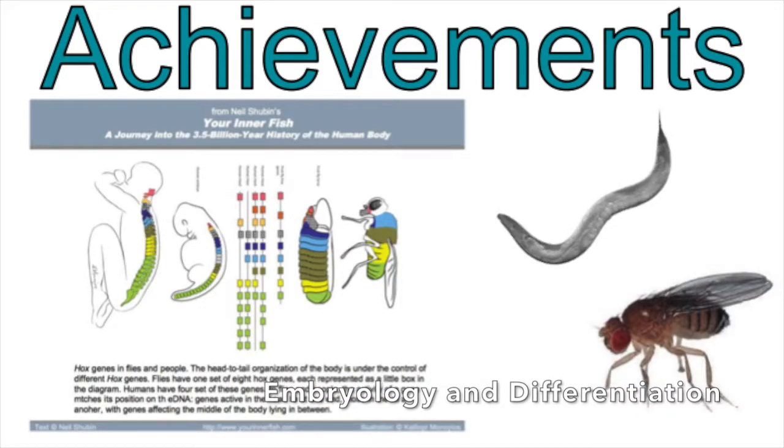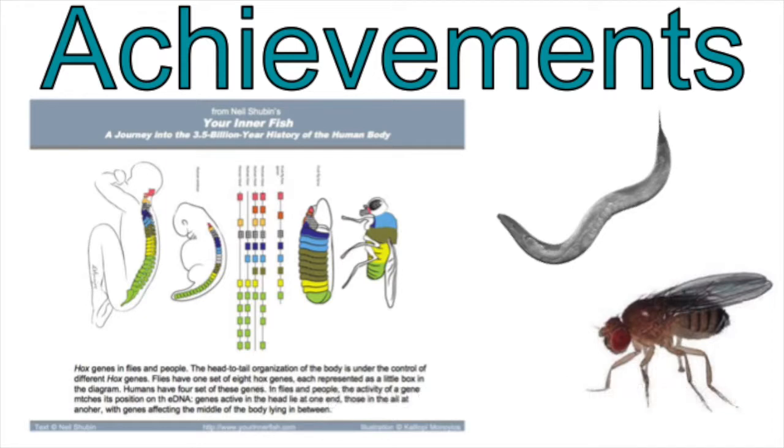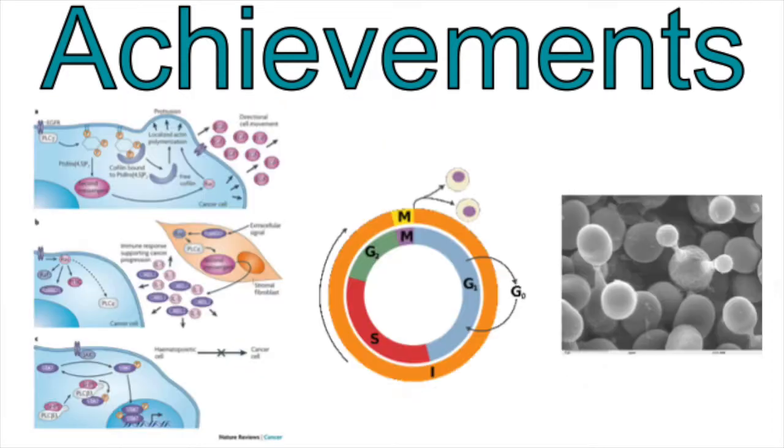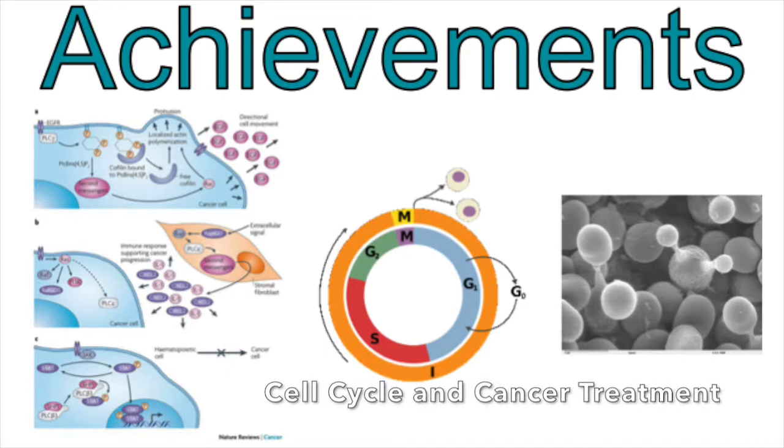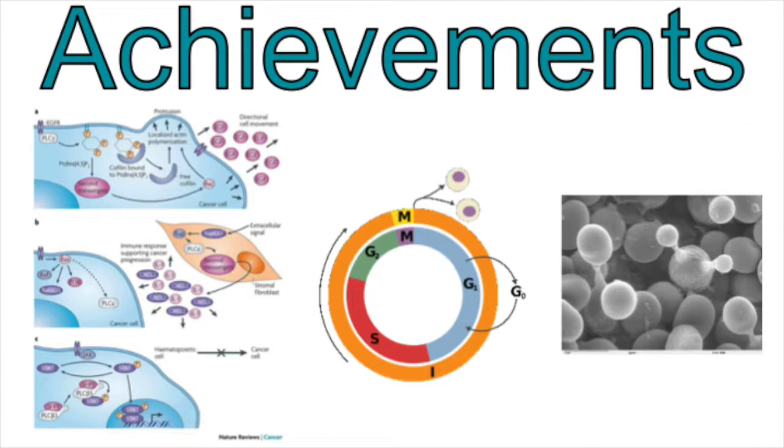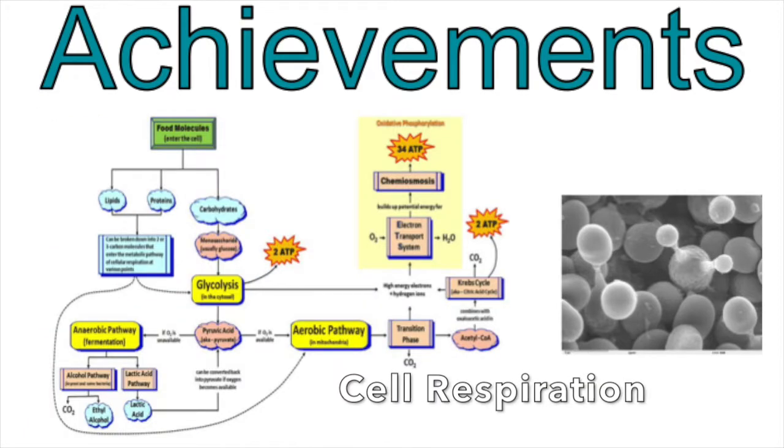C. elegans and D. melanogaster have allowed us to understand differentiation of cells from embryos to fully developed organisms. S. cerevisiae revealed how the cell cycle is organized, allowing for better design of cancer-treating medications that do not disrupt normal cell division, and it can be used in cell respiration experiments effectively and efficiently.